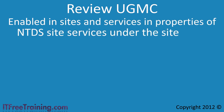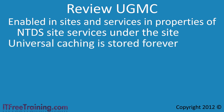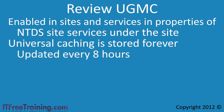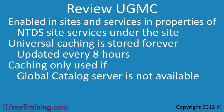To review what we have covered: a domain controller that is not a global catalog server can have universal membership caching enabled at the site level. Once enabled, the domain controller will cache universal group information on the domain controller indefinitely. In order for this to occur, the user needs to authenticate off that domain controller once. After this occurs, their universal group membership is stored on the domain controller and updated every 8 hours. The universal group membership cache is only used if a global catalog server is unavailable on the network. Enabling universal caching does not stop the domain controller from attempting to contact a global catalog server when a user authenticates. If a global catalog server cannot be contacted, then the universal group cached on the server is used.